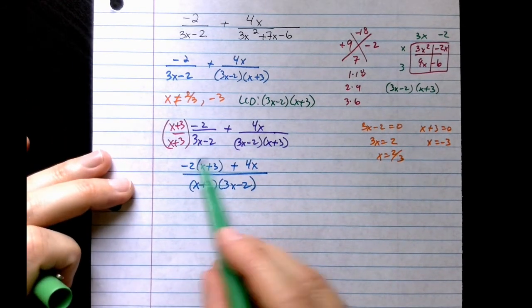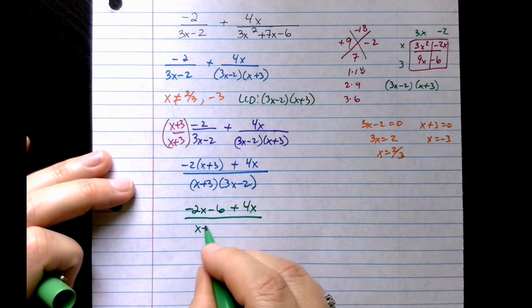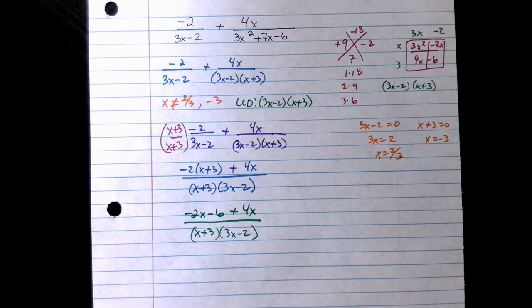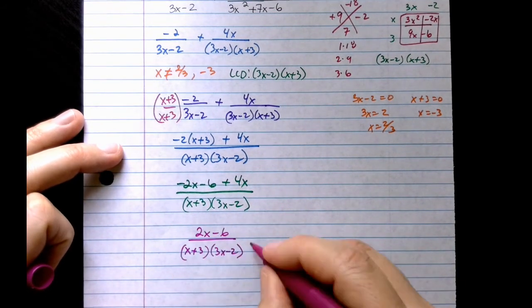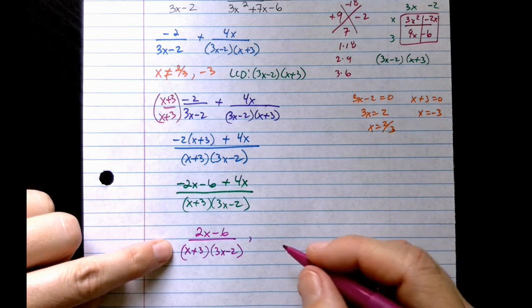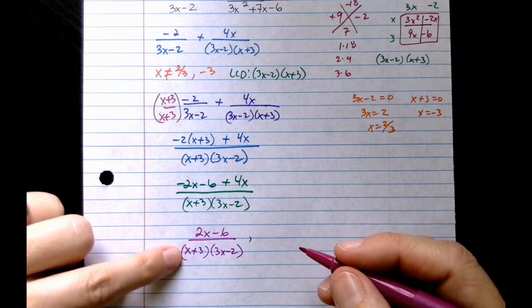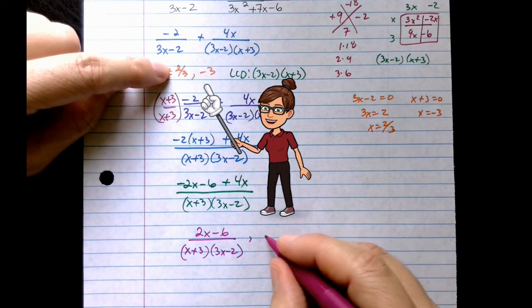Next, I'm going to do distributive property and combine like terms. Now that's simplified down, I can't really do much with it at this point. So my denominator is the LCD from up here, and these restrictions still hold, so I list them to the side.